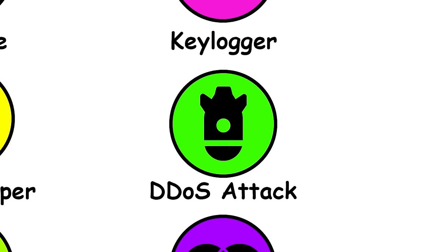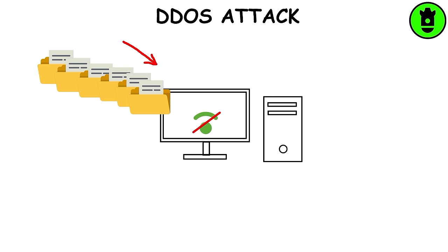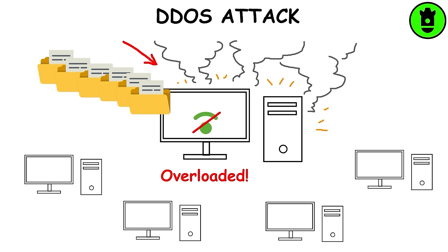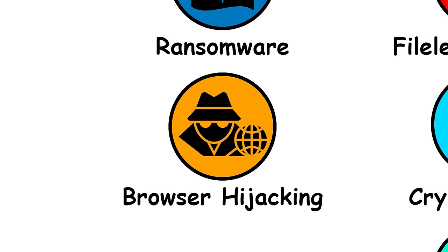DDoS attack. It happens when the hacker tries to make a computer or connection unavailable, and it's usually done by flooding the targeted computer or resource with superfluous requests in an attempt to overload them and prevent some or all legitimate requests from being fulfilled. In a DDoS attack, the incoming traffic flooding the victim originates from many different sources, which most of the time are other infected computers used as bots in a botnet.